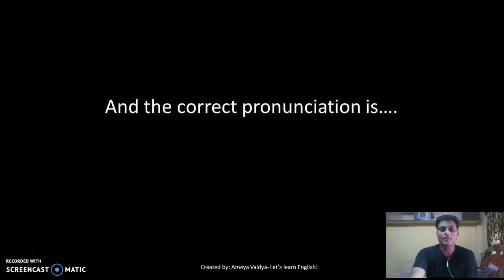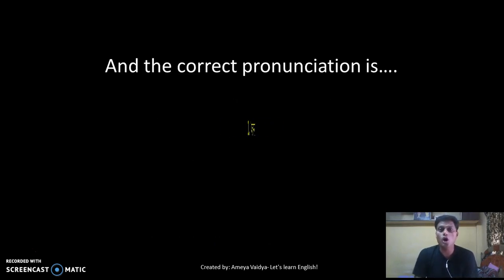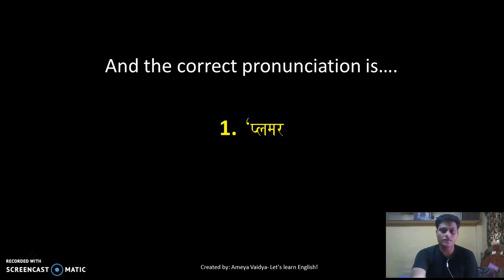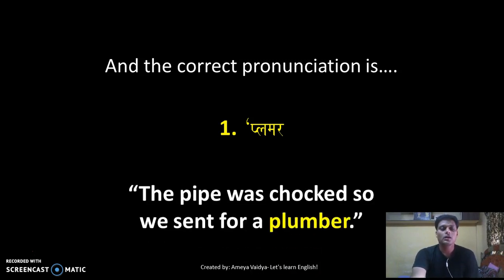Your time is up. The correct pronunciation is 'plumber' — with a silent 'b.' You don't say 'plumBer.' The 'b' is silent, just as it is in the word 'doubt' or 'debt.' In these parts of the world it's very common to pronounce the 'b,' but you must say 'PLUMmer.' Example: 'The pipe was choked so we sent for a plumber.'